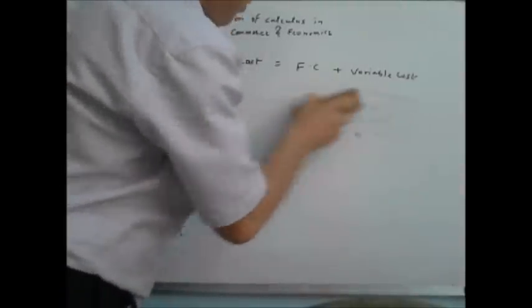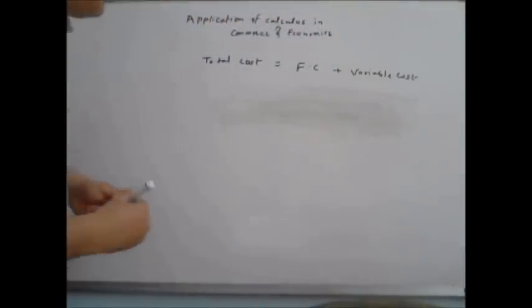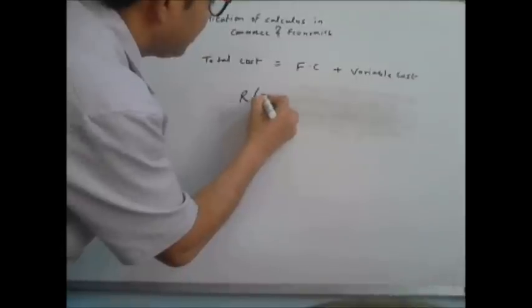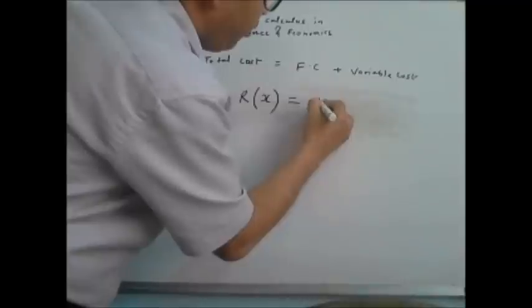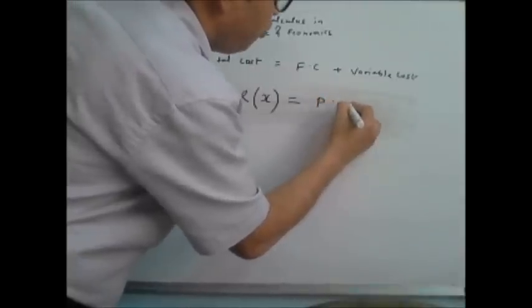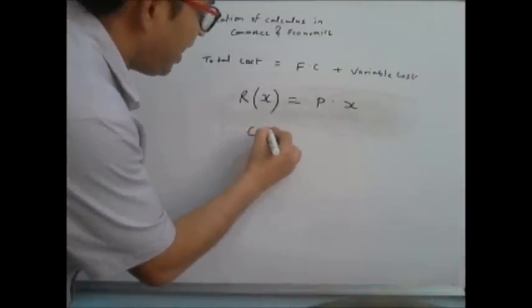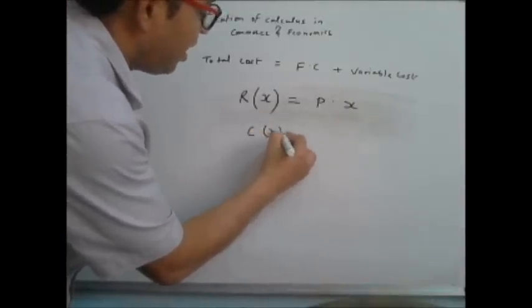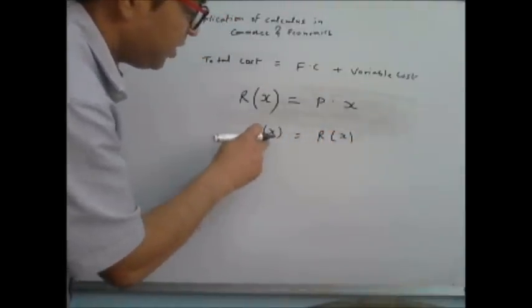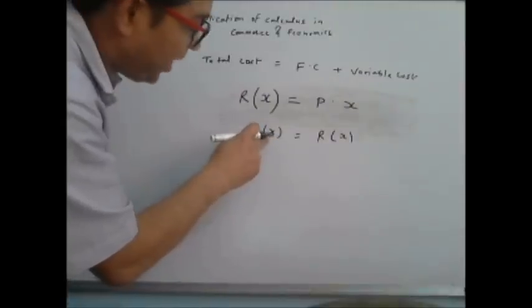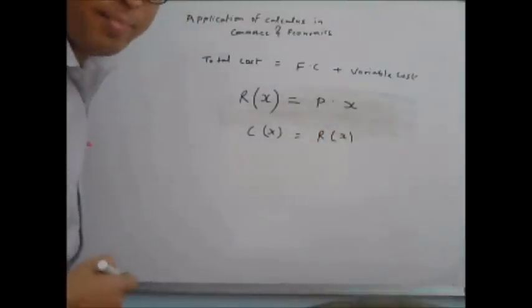Now, what is the revenue function? The revenue function is actually the price per unit multiplied by the number of units sold. C(x) shows the cost function dependent on x, and R(x) shows that revenue is dependent on x, the number of units sold.